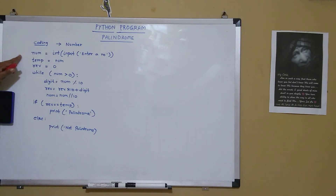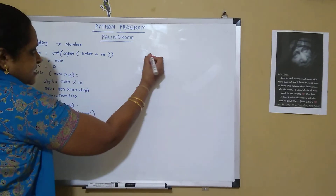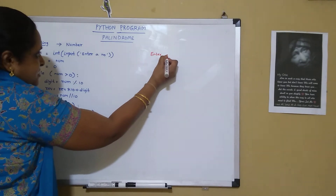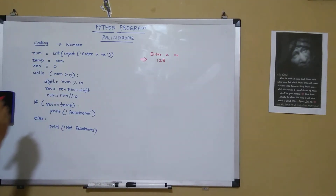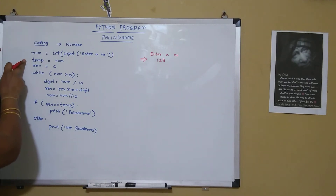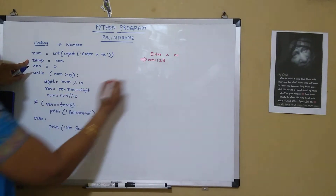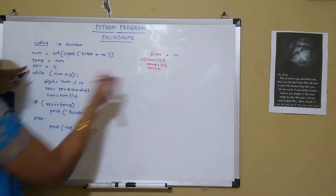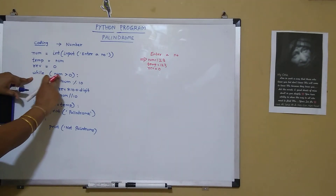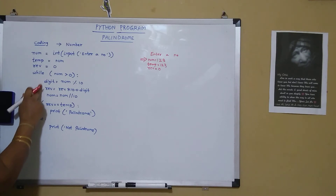This is the code for checking if a number entered by the user is palindrome or not. Suppose the user enters the number 123. Then num will have the value 123, and temp will also have the value 123. Reverse is initialized to 0. Then it enters the while loop and checks if the number is greater than 0 — yes, it is, so it enters the loop.